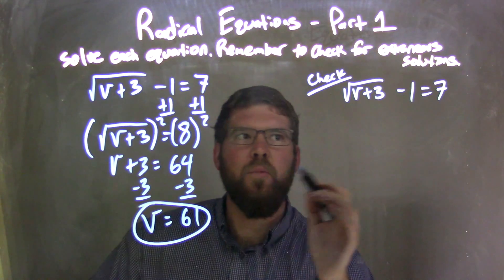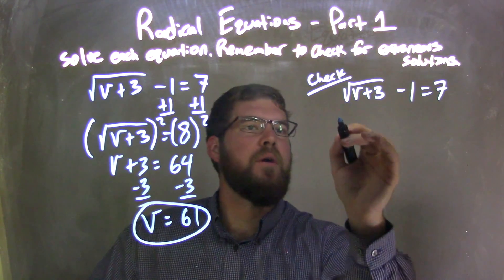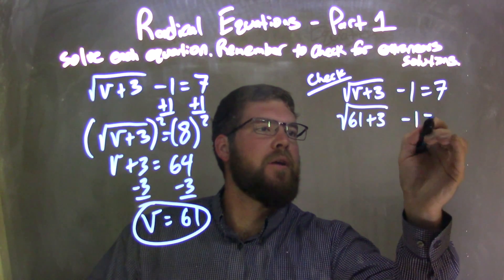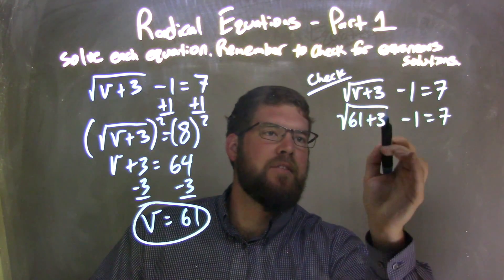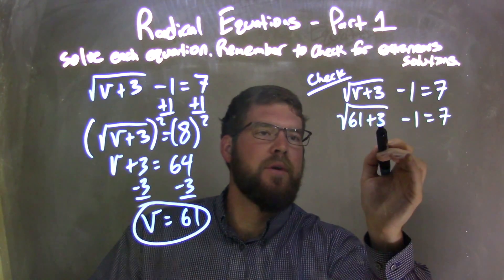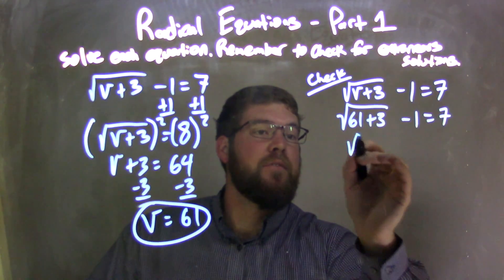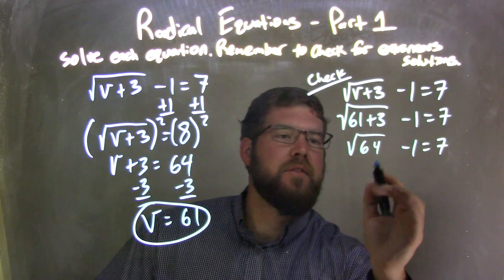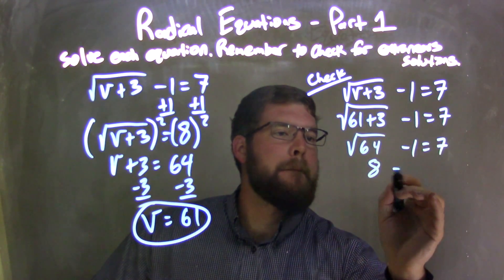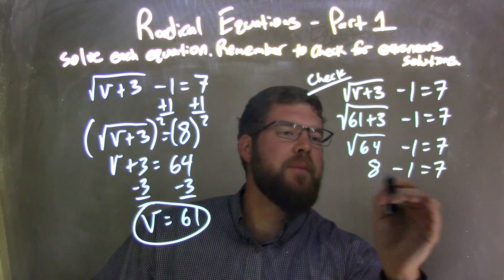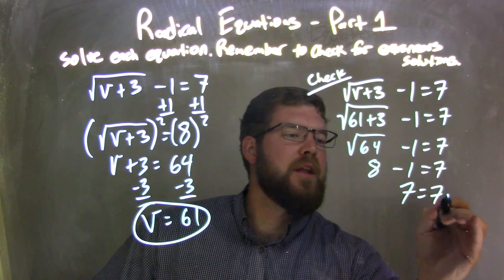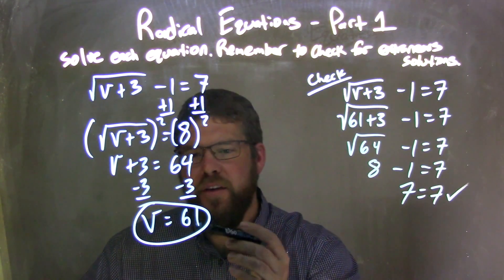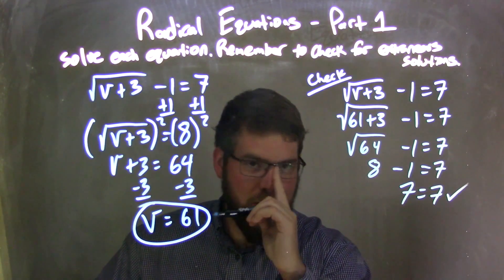Now, I'm going to substitute 61 in for v. So, 61 plus 3 minus 1 equals 7. Be careful - that square root is just over the 61 plus 3. 61 plus 3 is 64, minus 1 equals 7. Square root of 64 is 8, minus 1 equals 7. 8 minus 1 is 7. Left and right hand sides are equal. So we're confident that v equals 61 is my final answer.